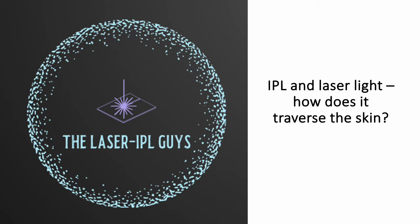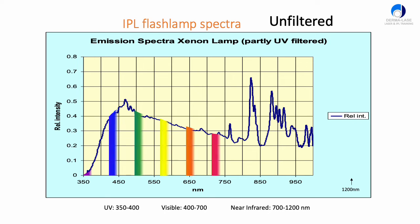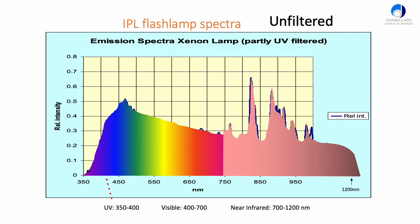Today I'm going to talk about IPL and laser light energy and how they traverse or progress through the skin. When we fire an IPL flash lamp, we generate quite a large range of wavelengths, from about 350 up to about 1200 nanometers. This includes ultraviolet, visible, and near-infrared light energy, as you can see here.